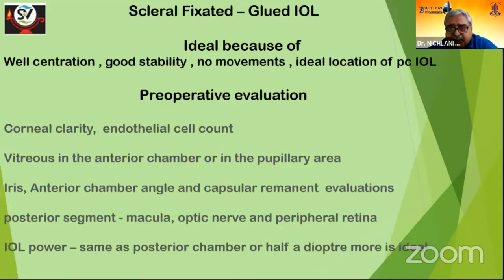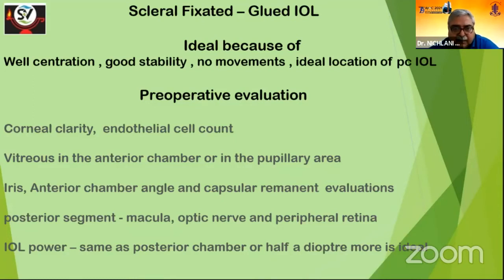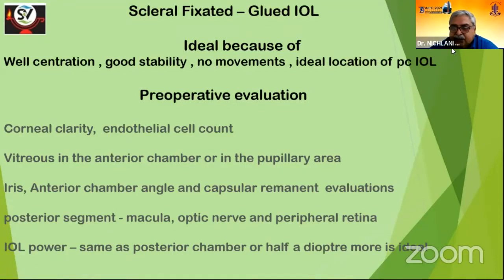Other methods include iris-fixed iris claw IOL, angle-supported anterior chamber IOL, and sulcus-placed IOL. Anterior chamber IOLs are to be avoided in angle abnormalities, glaucoma, or corneal endothelial damage. It depends on the surgeon's choice whether to use anterior chamber IOL, posterior chamber IOL, or glued fixated IOL. Advantages of glued IOL: well-centered, good stability, no phacodonesis, good for these dislocations due to high stability, and does not touch the anterior chamber.